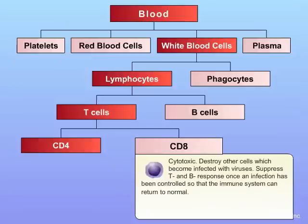The CD8 cells are referred to as cytotoxic T lymphocytes. These are cells that can destroy other cells which become infected by viruses. They can also suppress the T and B cell response once an infection has taken place, so that the immune system can return to normal status.